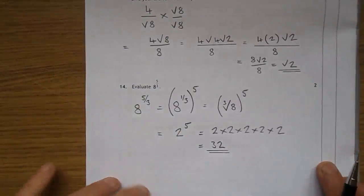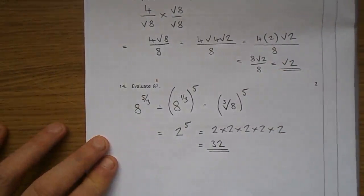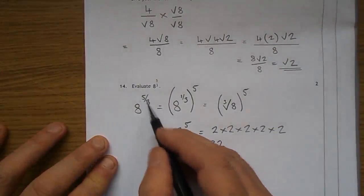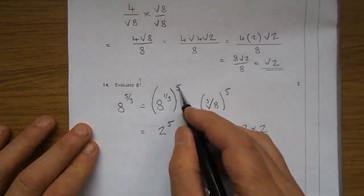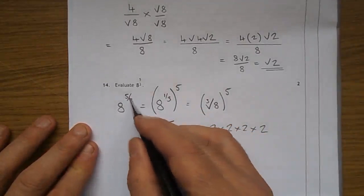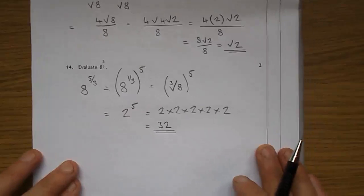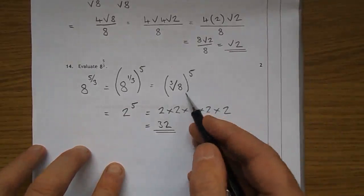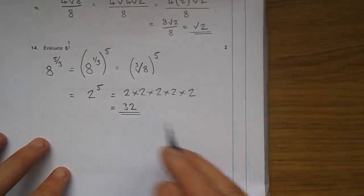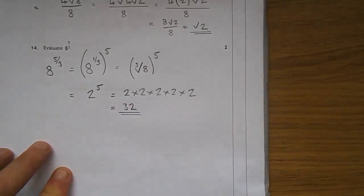Question 14. 8 to the power of 5/3. That's 8 to the power of 1/3 times 5. 1/3 is the cube root. The cube root of 8 is 2: 2 times 2 times 2 gives 8. So 2 to the power of 5. That's 2, 4, 8, 16, 32. 2 to the power of 5 is 32. And that's paper 1 done.